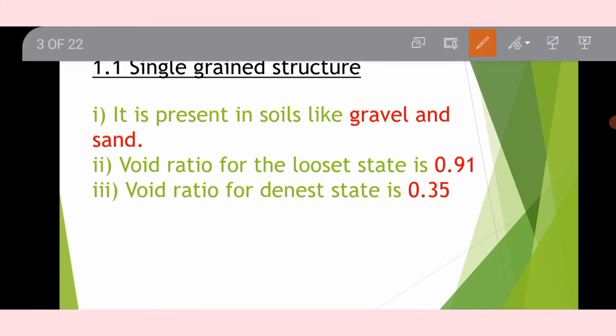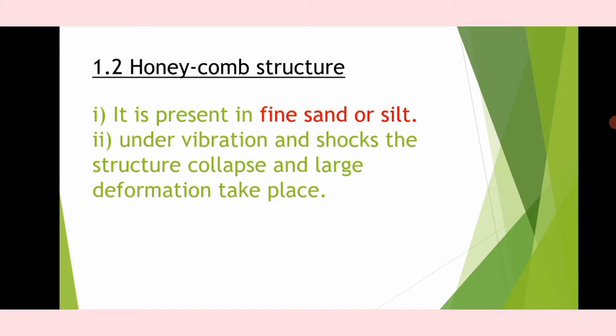Single grain structure is present in gravel and sand. The void ratio for the loose state is 0.92 and for the dense state is 0.32. The second structure — honeycomb structure — is present in fine sand or silt. Under vibration and shocks, the structure collapses and large deformation takes place.